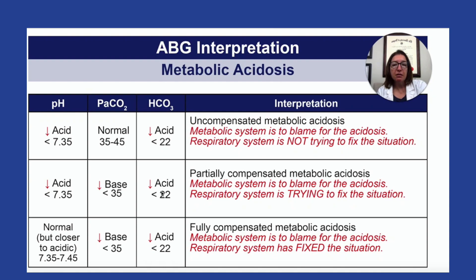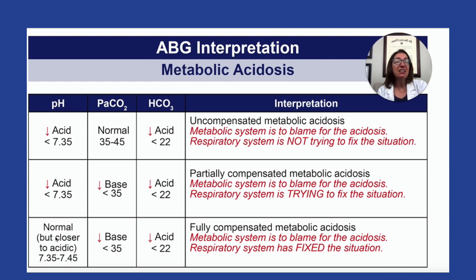The metabolic system is to blame for the acidosis. The respiratory system is trying to save the day but hasn't done so completely because that pH is still out of range. Then if we go down to this last row, if we have a pH that is within the normal range — so between 7.35 and 7.45 — but it's a little on the low side, like 7.35 or 7.36, then you can guess there may be some compensation occurring.